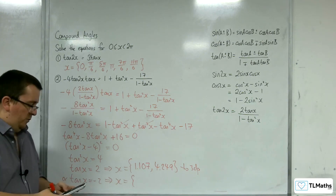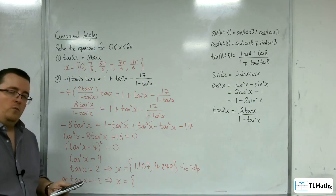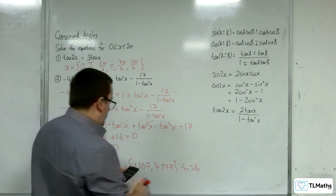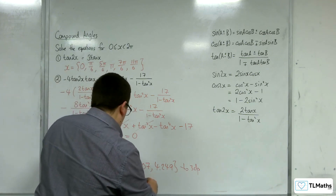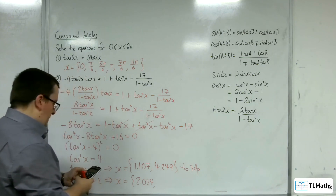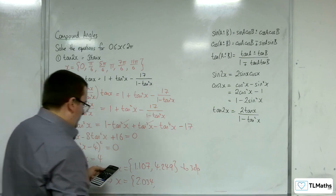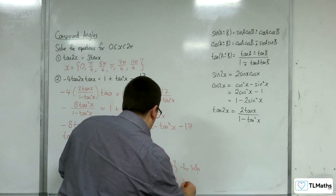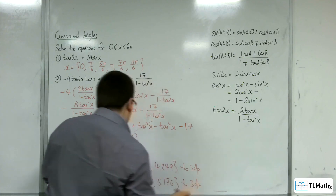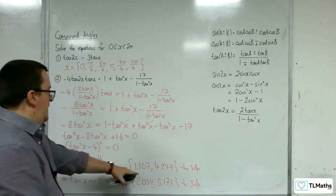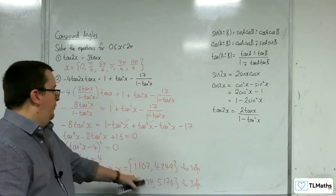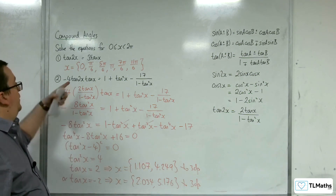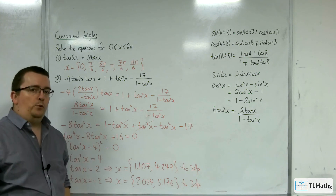Inverse tan of minus 2 is minus 1.107 — that's outside the range — so add pi to that, we get 2.034. Add pi to that, 5.176. Add pi to that, you're outside the range. So these are the four solutions in the range to three decimal places that solve equation number 2.